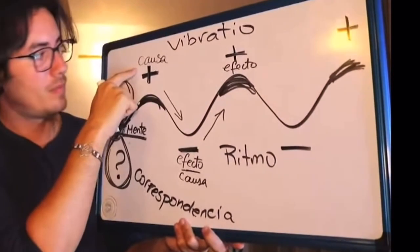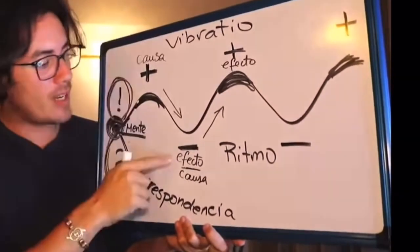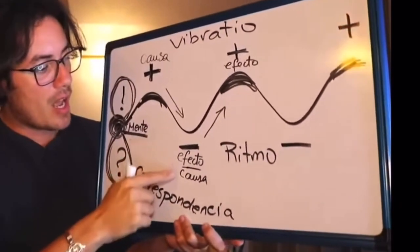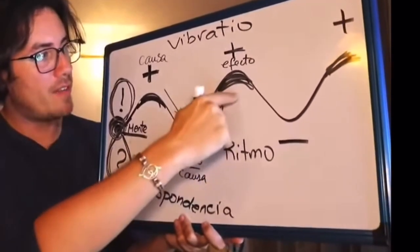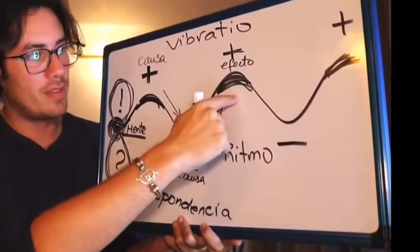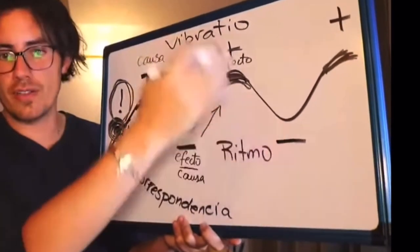And this frequency is what we will call rhythm. The cause of this positive generates an effect in this negative, and the cause of this negative generates an effect in this positive. And so on, it repeats in cause and effect constantly.